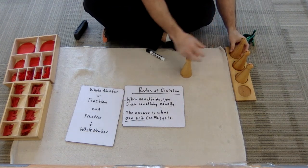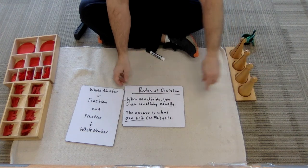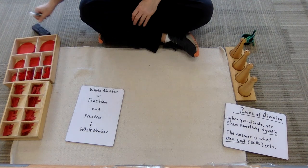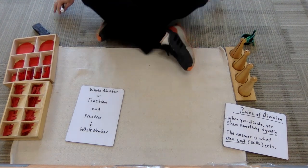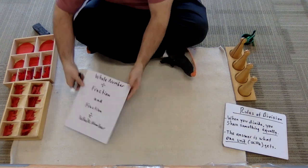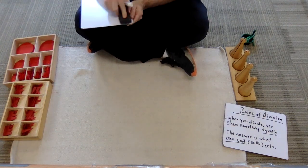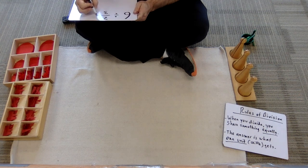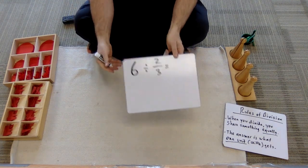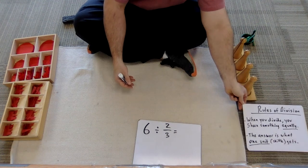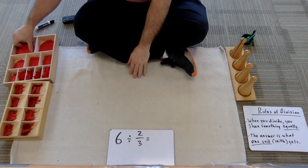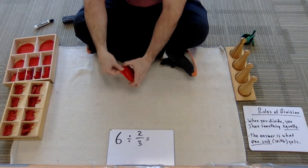So you'll see how that plays out, but those are the rules of division for Montessori work. Here we go — this is going to be a whole number divided by a fraction first, and we'll start with six divided by two-thirds. So here's our problem: six divided by two-thirds.